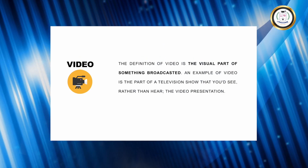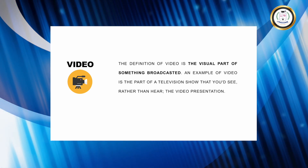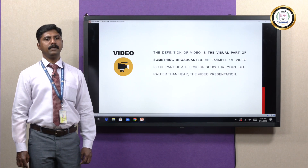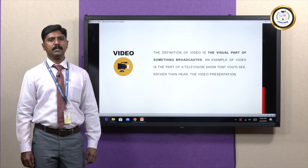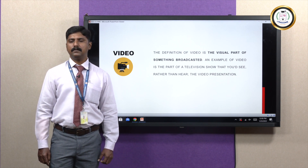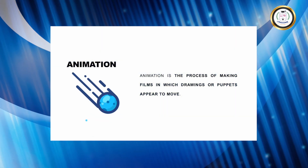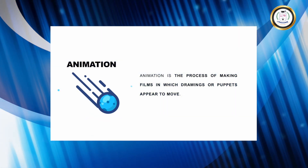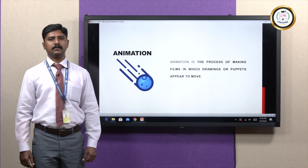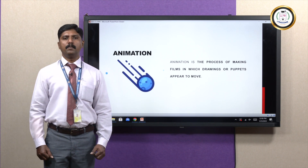Followed by image is video. The definition of video is the visual part of something broadcasted. An example of video is the part of a television show that you have seen rather than heard. Animation is the next element — the process of making a film in which drawings or puppets are placed consecutively to show movement.